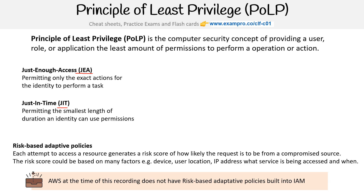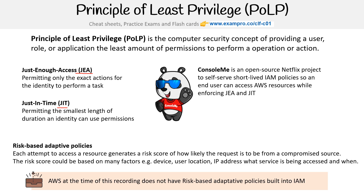Talking about just enough access and just in time — for JIT in AWS, you could just add or remove permissions manually, but one option is ConsoleMe, an open-source Netflix project for self-serving short-lived IAM policies. End users can access AWS resources while enforcing JEA and JIT. It provides a self-serve wizard where you request the permissions you need and the system decides what you can have, freeing you from manually managing access length and approvals.